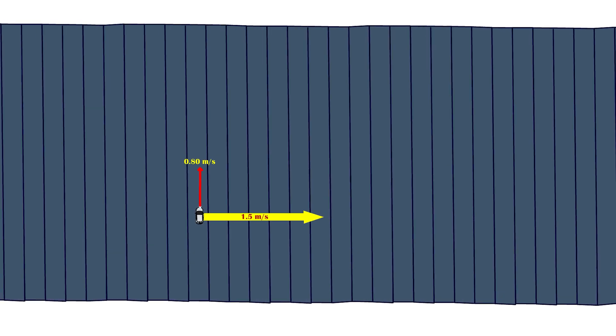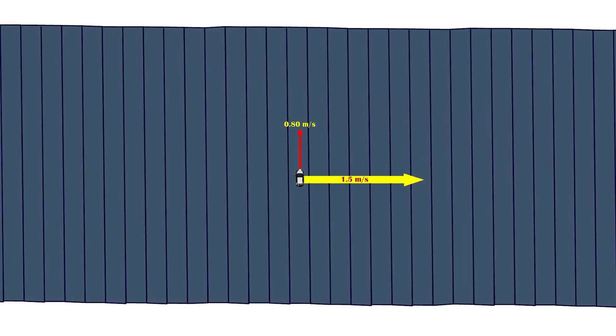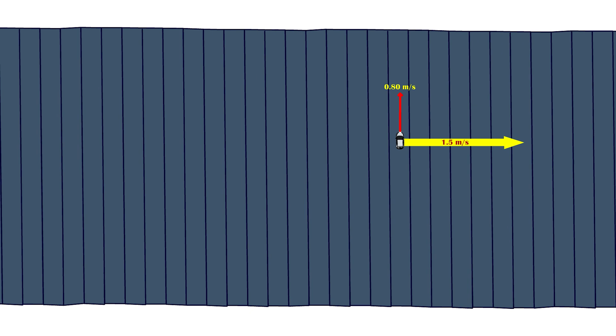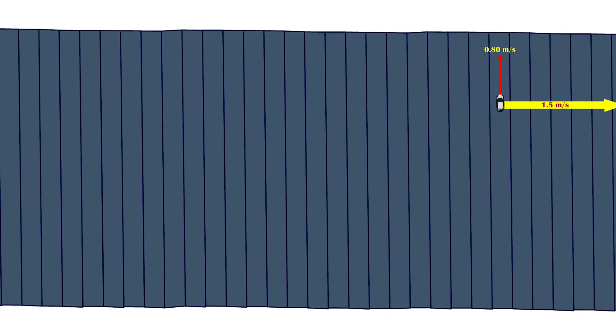The car's resultant velocity while moving from one side of the walkway to the other will be the combination of two independent motions. The moving car can be thought of as traveling first at 0.80 meters per second across the walkway and then at 1.5 meters per second down the walkway. In this way, we can draw a given vector anywhere in the diagram as long as the vector is parallel to its previous alignment, so that it still points in the same direction.